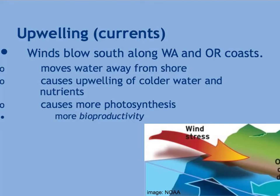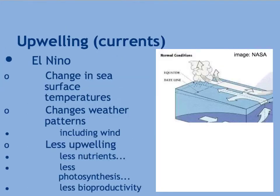Today in class you explored the concept of upwelling. This is very important, especially along the Oregon and Washington coasts, as it will cause water to move away from shore because of the way the wind moves, which causes the upwelling of colder water and nutrients. Because those nutrients come up, it enables more photosynthesis to happen as long as the other conditions are right.